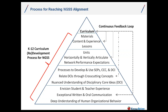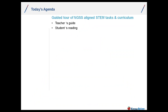Many curriculum companies waited until the final standards were published and made a last-minute move to point out alignment rather than revamping from the ground up. They probably have ten years to go to get where KnowAdam is. Now let's look at what a next-generation aligned STEM task and curriculum looks like — going soup to nuts from a teacher's guide perspective and a student's reading and guide perspective, so you can see where bits and pieces you have might fit.